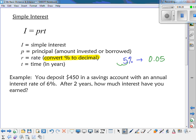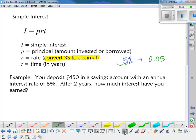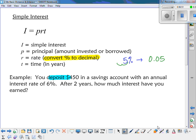And then T is the time in years. So if they give you a problem with six months, how much of a year is that? Half. So you would use 0.5 in that case. So you deposit into a savings account, 450 into a savings account, with an annual interest rate of 6%. After two years, how much interest have you earned? So it's a good idea to go through and highlight or mark the information that they gave you. So I deposited 450. My rate is 6%. After two years, how much interest?